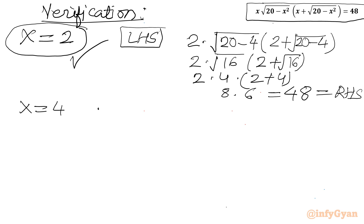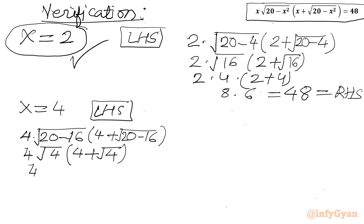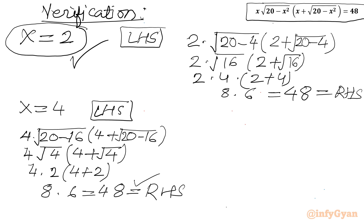Now let us consider x equals 4. LHS equals 4 times square root of (20 minus 16) times (4 plus square root of (20 minus 16)), which simplifies to 4 times square root 4 times (4 plus square root 4), equal to 4 times 2 times (4 plus 2), equal to 8 times 6, equal to 48. So x equals 4 is also a verified solution.